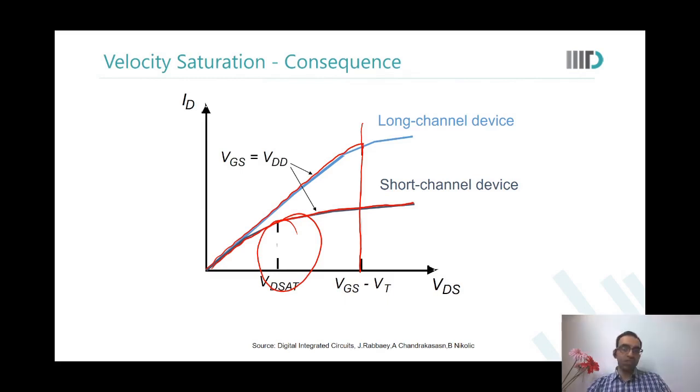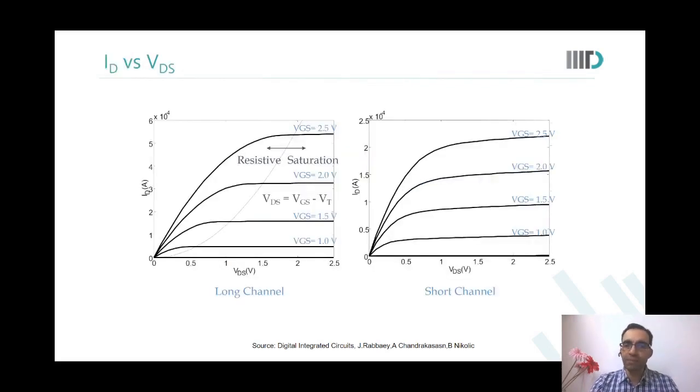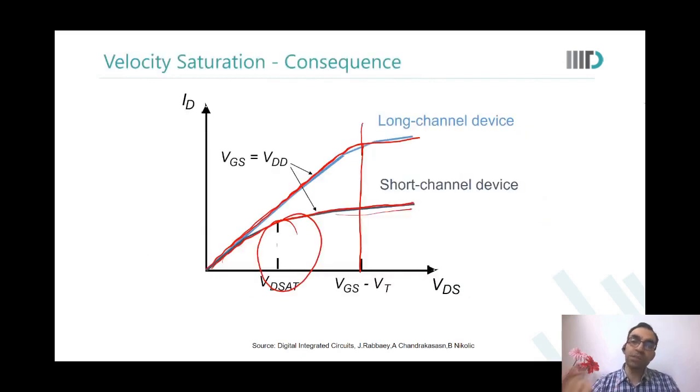So when we scaled to advanced technologies and short channel effects started to appear, we started to observe: our old model had said we should get this kind of current, we are getting only this kind of current. What is happening? Then the concept of velocity saturation was devised. We said that in short channel devices, instead of at VGS minus VT, we would say current saturates at what is called VDSat.